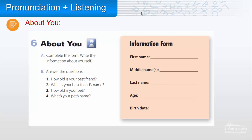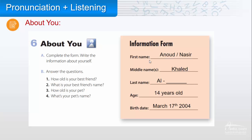Now here we have an information form. Section A: complete the form and write information about yourself. First, we have first name — here you will write your first name, for example Anoud or Nasser. Middle name is the name of your father, for example Khalid. Last name is your family name. Age: 14 years old. Birth date: when were you born? For example, March 17th, 2004.